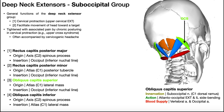In green is the obliquus capitis superior. These two oblique muscles are termed obliquus because they run at angles. This one originates off the lateral mass of the atlas, C1, and inserts on the inferior nuchal line of the occiput. It is innervated by the suboccipital nerve and produces a little bit of atlanto-occipital extension and some ipsilateral side bending. Side bending, like flexion and extension, tends to occur at the atlanto-occipital joint — really just stabilization in a side-bent position. Blood supply is via the vertebral artery and the occipital artery.